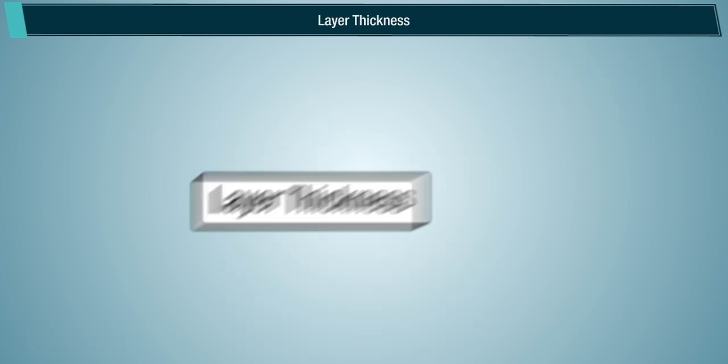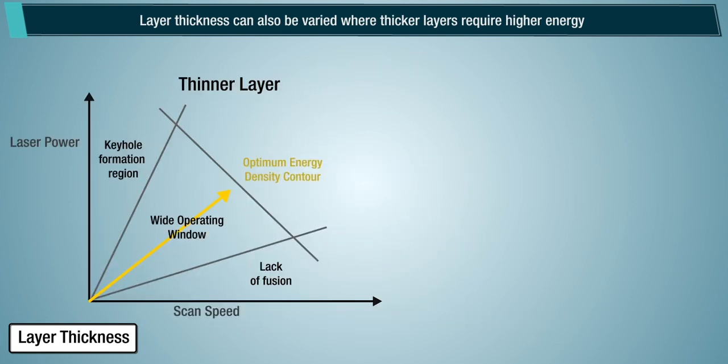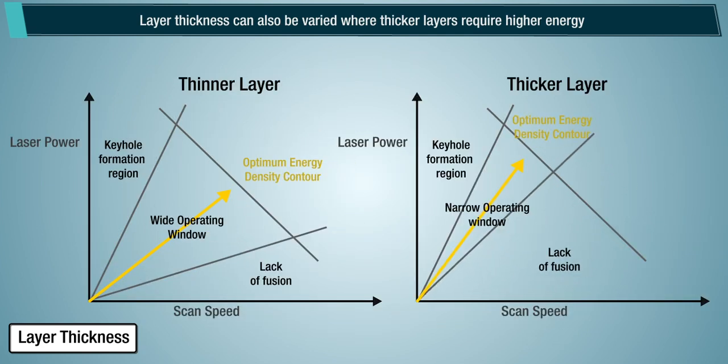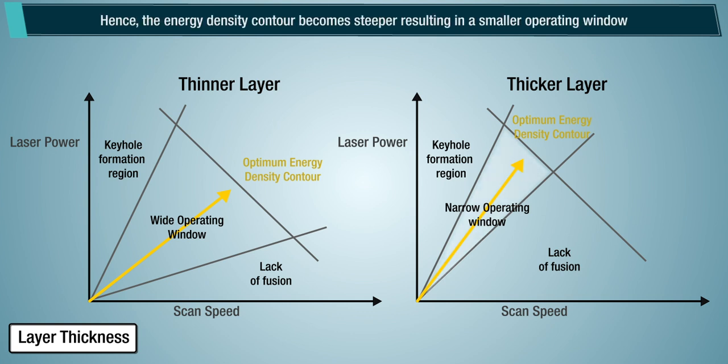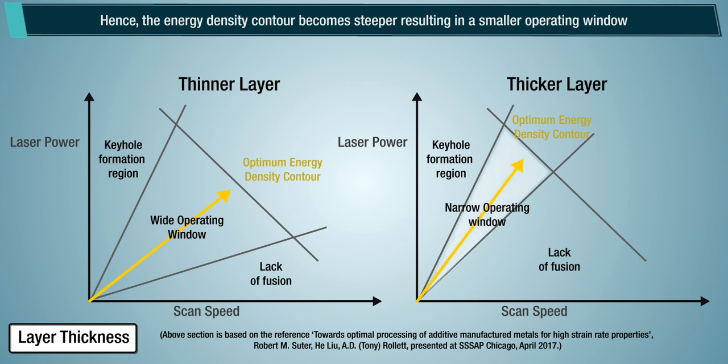Layer thickness can also be varied where thicker layers require higher energy, to ensure complete fusion to the metal powder underneath. With the increase in layer thickness, energy input per layer must also increase. Hence, the energy density contour becomes steeper resulting in a smaller operating window.